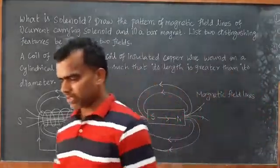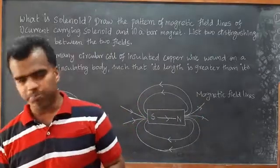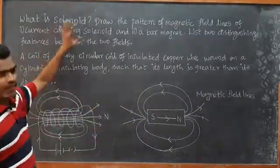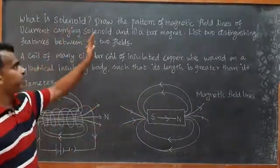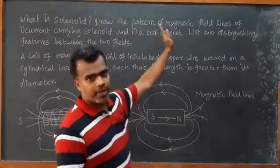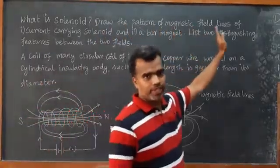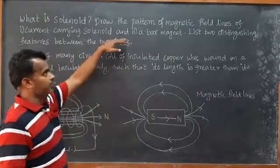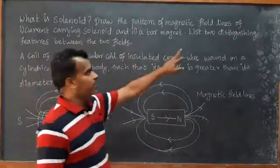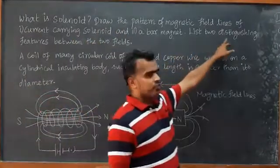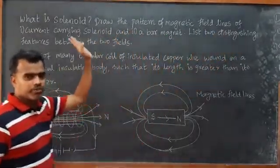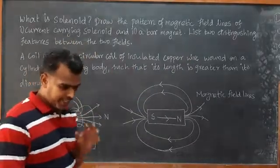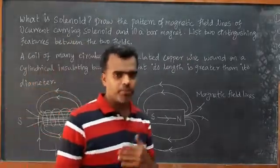The question is: what is solenoid? Draw the magnetic field lines of a current-carrying solenoid and bar magnet. List two distinct features between these two fields.